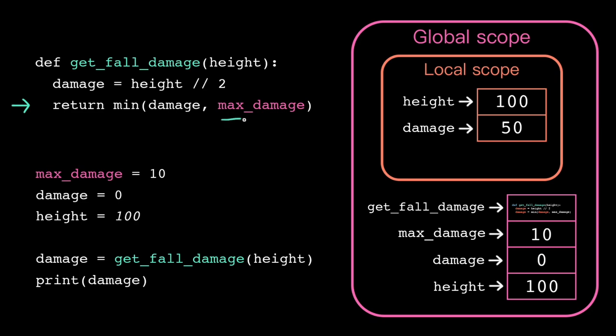So what happens when we access max damage inside the function? Well it turns out, while we can't modify the value of a global variable from local scope, we can view the value. When the computer looks up a name, it starts its search in the closest scope.